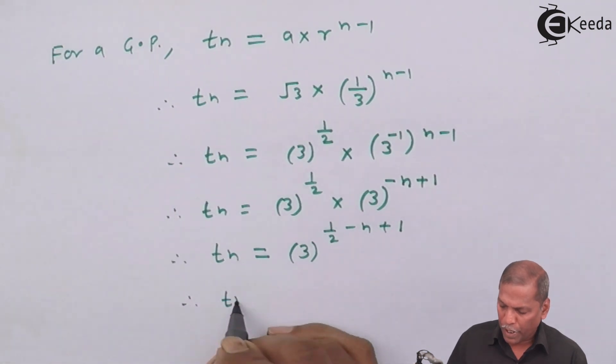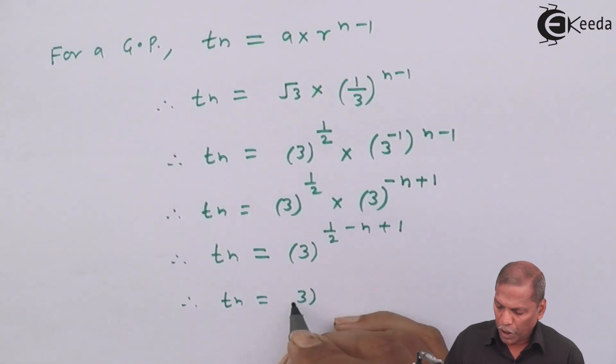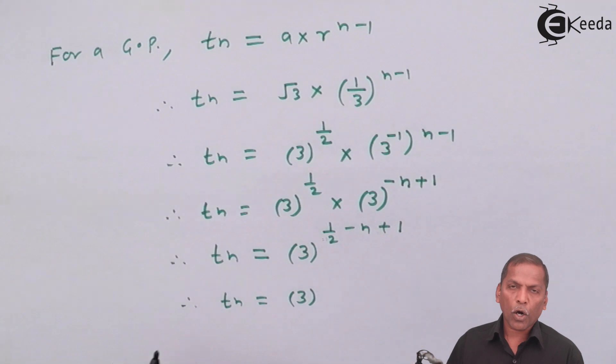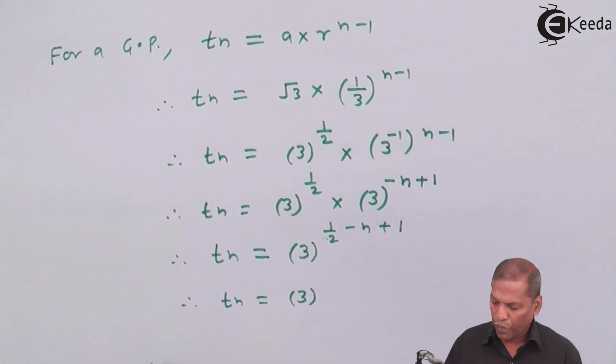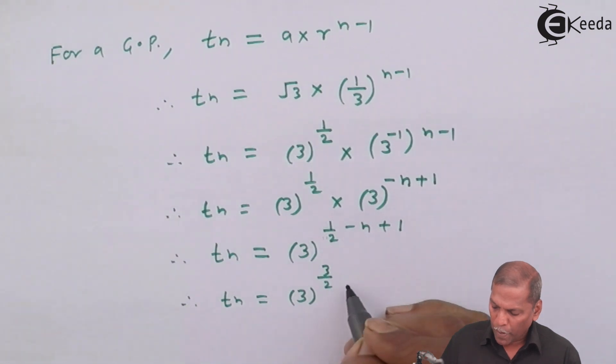And finally, Tn equals 3 raised to, now 1 by 2 plus 1 gives 3 by 2, and then minus n we write as it is.